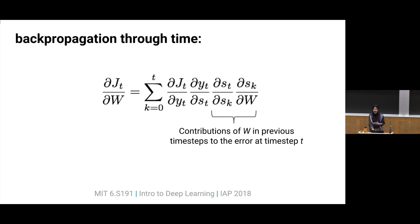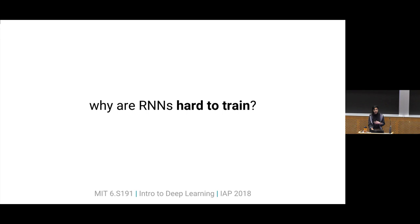Written as a general sum — not just for time step two — this is basically the process of backpropagation through time. You would do this for every parameter in your network, then use that in the process of gradient descent. In practice, RNNs are a bit difficult to train, and I want to go through why that is and some ways to address these issues.